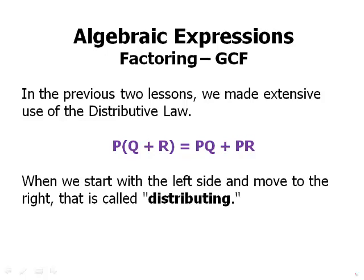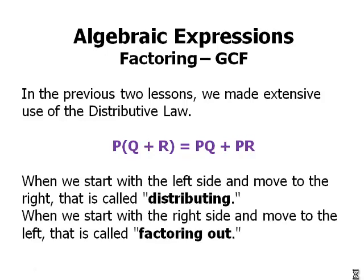But of course, this is an equation. We can use it either way when we start on the right side and move to the left. So we express p now as a factor of the whole thing rather than a factor of each individual term. That is called factoring out. It's very important to recognize that distributing and factoring out are two sides of the same coin. It's the same fundamental process. We just have two different words for it depending on which way we're going in that process.